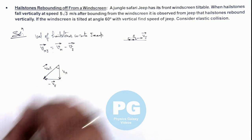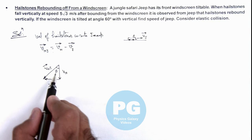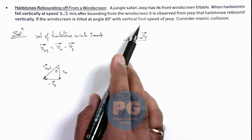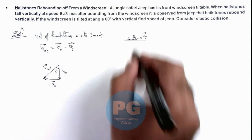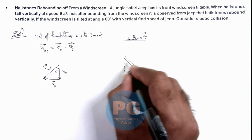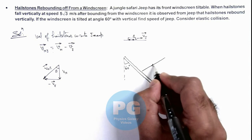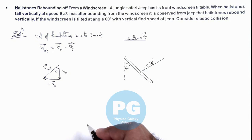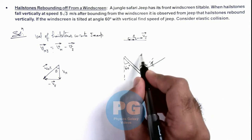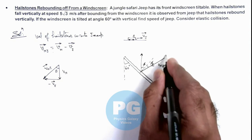In this situation, say this angle is equal to theta. We are given that theta is such that after colliding with the windscreen the hailstones will rebound vertically. The windscreen is tilted at an angle of 60 degrees with the vertical. Drawing an enlarged view of the windscreen — the windscreen is tilted at 60 degrees with the vertical, and the hailstones strike making an angle φ with the normal to the windscreen. With elastic collision, the hailstones rebound at the same angle φ, because the angle of incidence and angle of reflection must be equal. The velocity of the hailstone with respect to the jeep is at an angle theta.